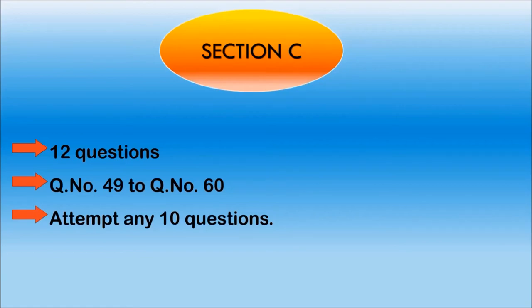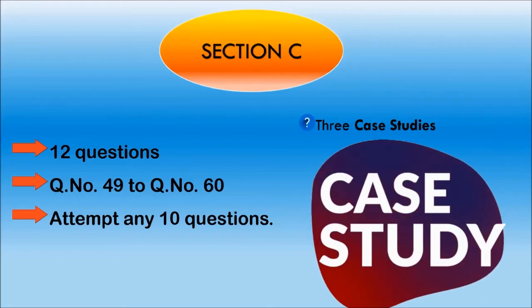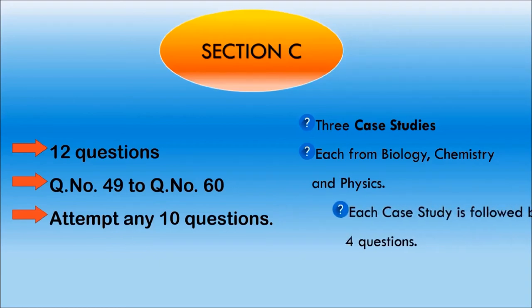Now, what type of questions have been asked in Section C? Let's see. There will be three case studies. These case studies are again the practical situations. They will give a big paragraph describing these cases. The sample paper has each case study related to biology, chemistry and physics. And each case study is followed by four questions. I think you have got an idea how the question paper is going to be. And I hope that this video is really helpful for you.